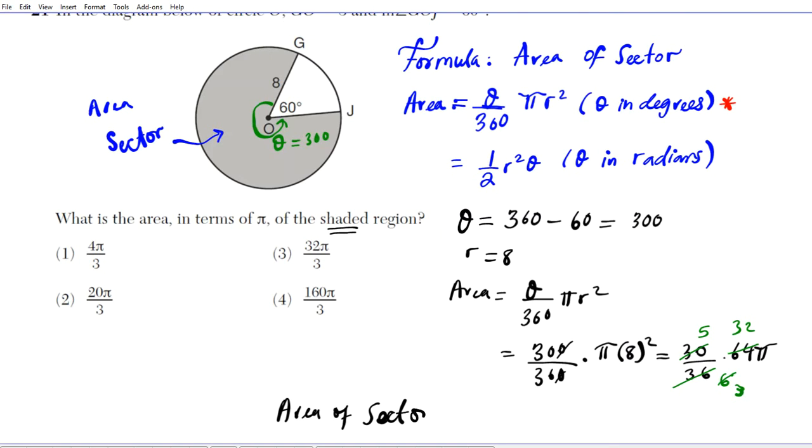If you do your calculator, you end up with 160 pi for the numerator over 3 for the denominator. Alright, so that's your final answer for question 21. Thank you.